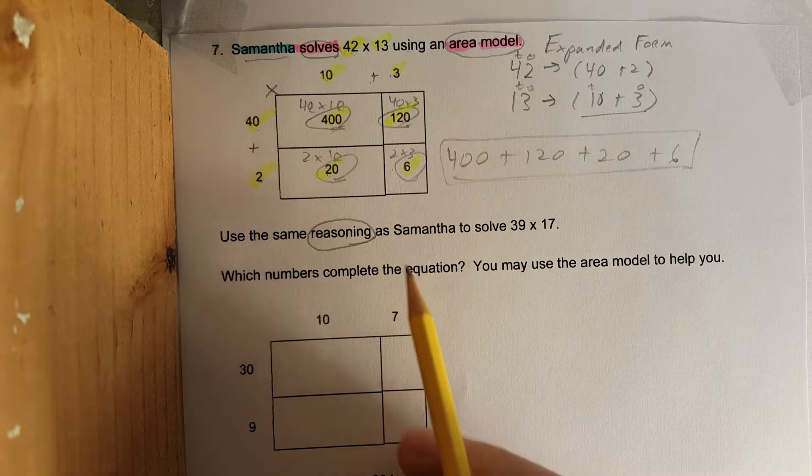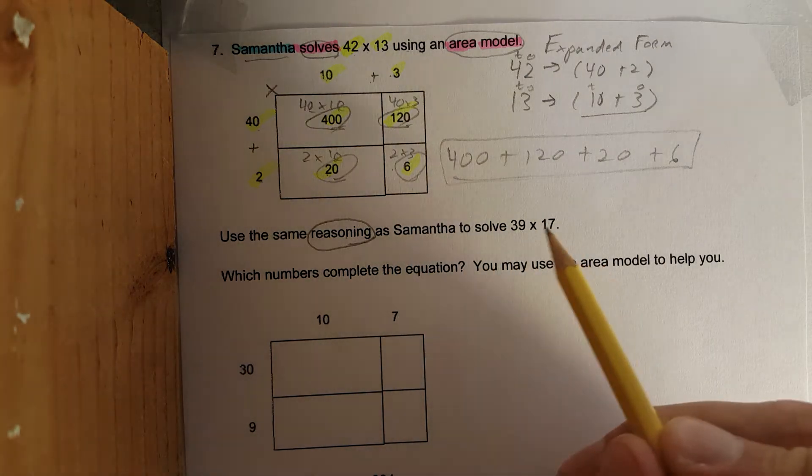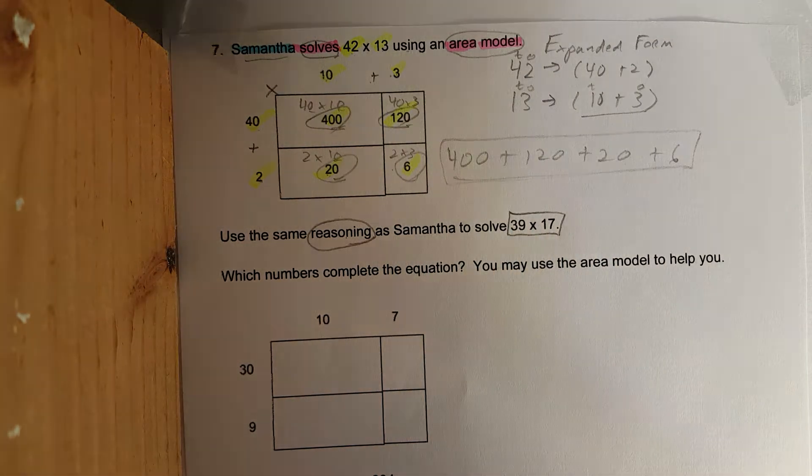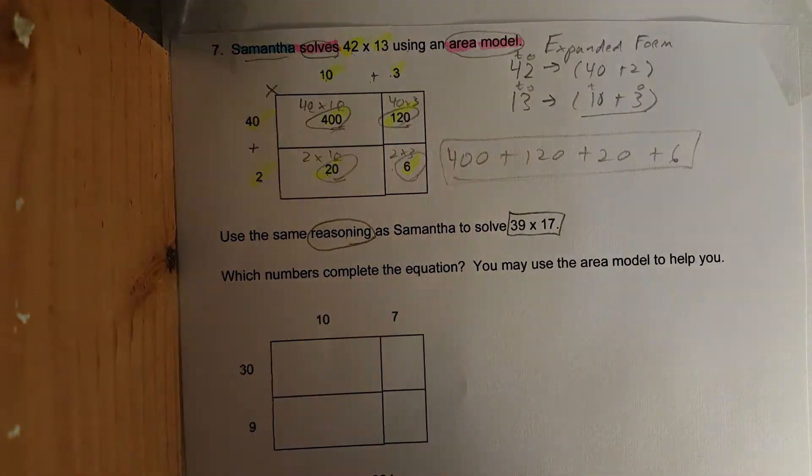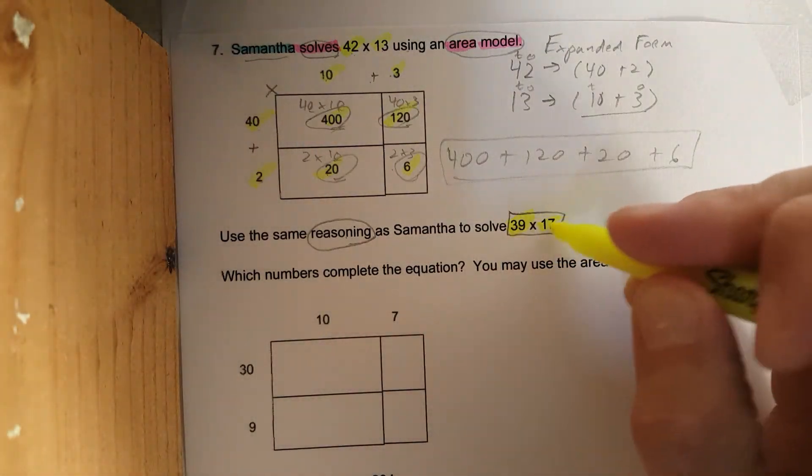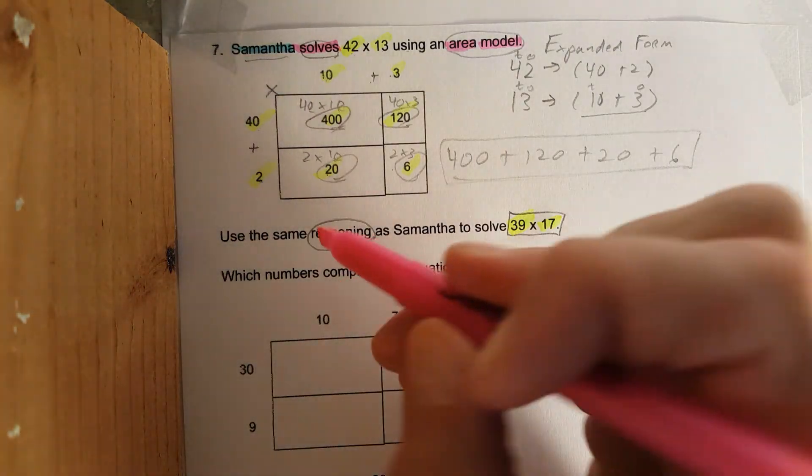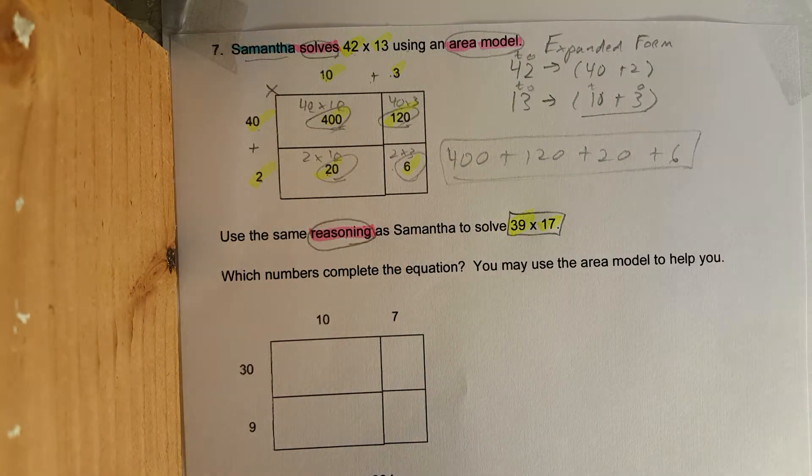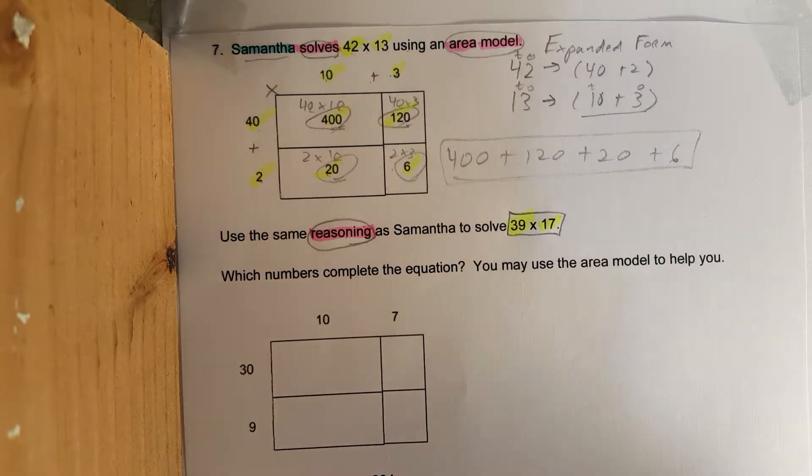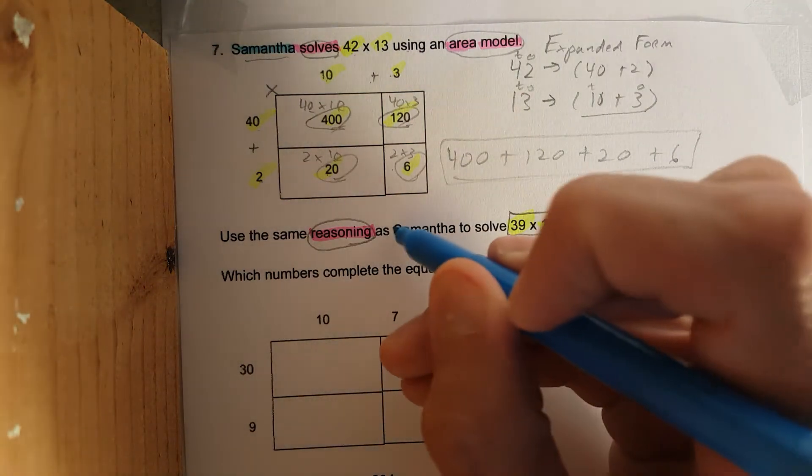So we need to use this reasoning to solve 39 times 17. Keyword: reasoning, thought process, the way the problem was solved right up above.